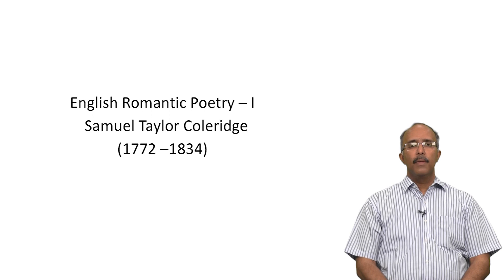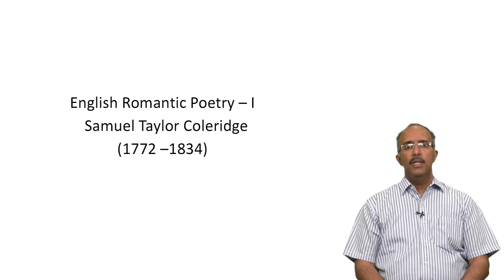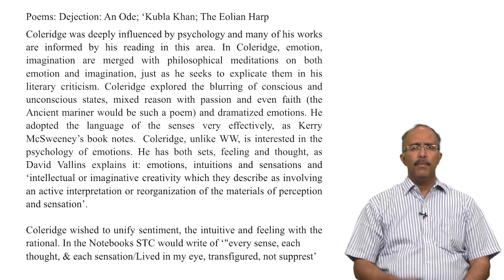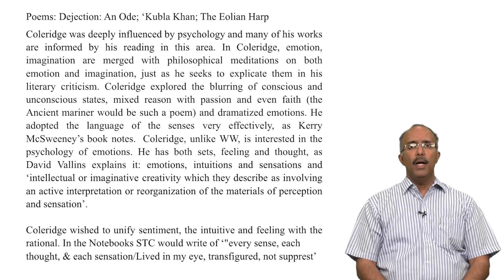Hello everybody. We continue the sessions on English Romantic Poetry. Today's session is devoted to Samuel Taylor Coleridge, the other big romantic of the first generation, 1772 to 1834. Some of the poems which will be part of the discussion include Dejection: An Ode, Kubla Khan, and The Aeolian Harp.